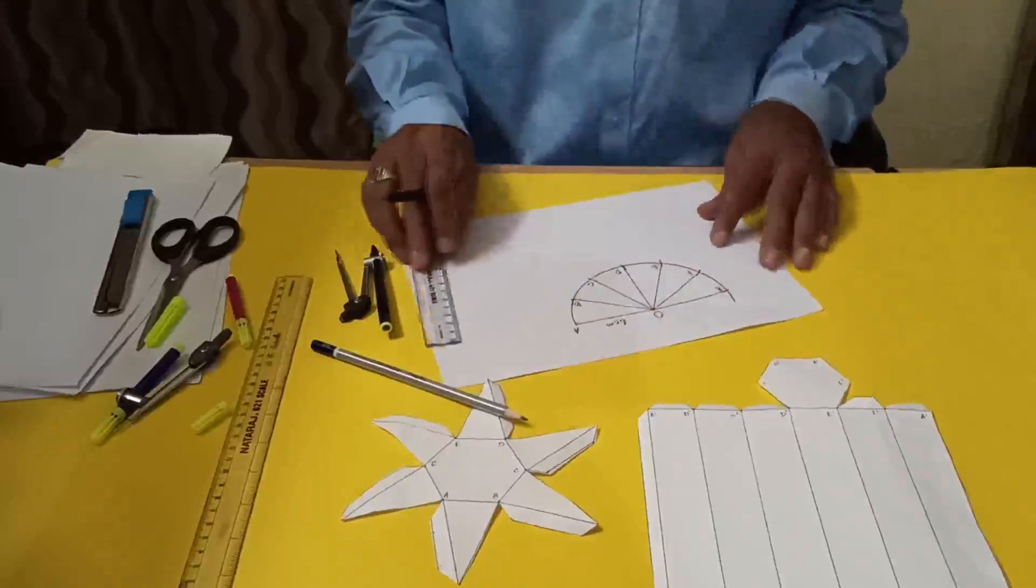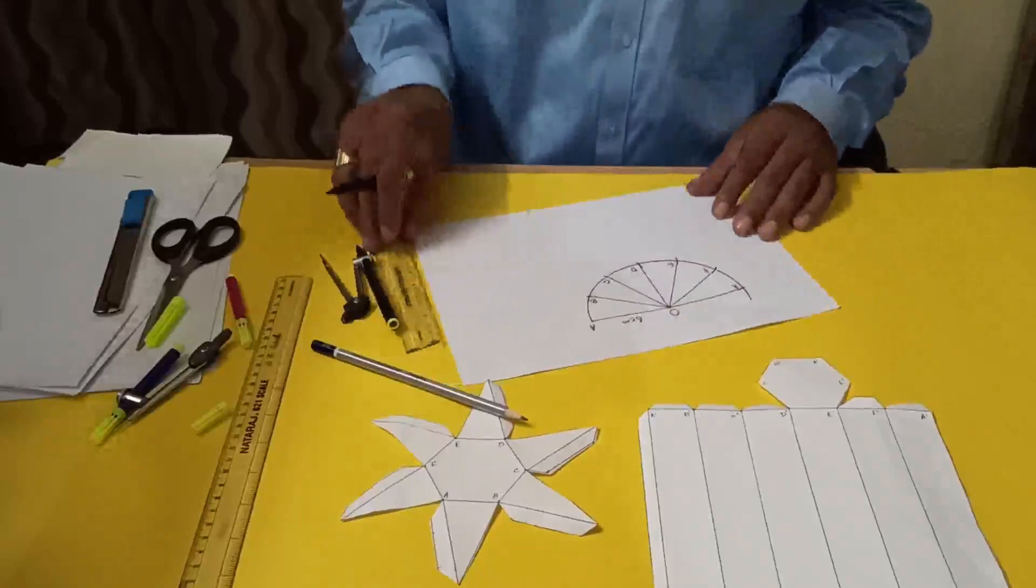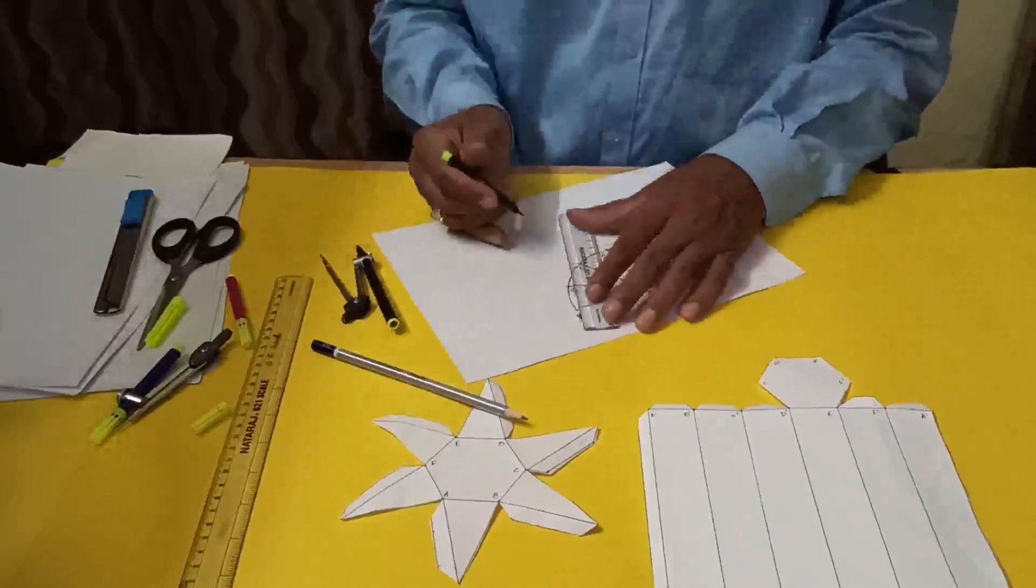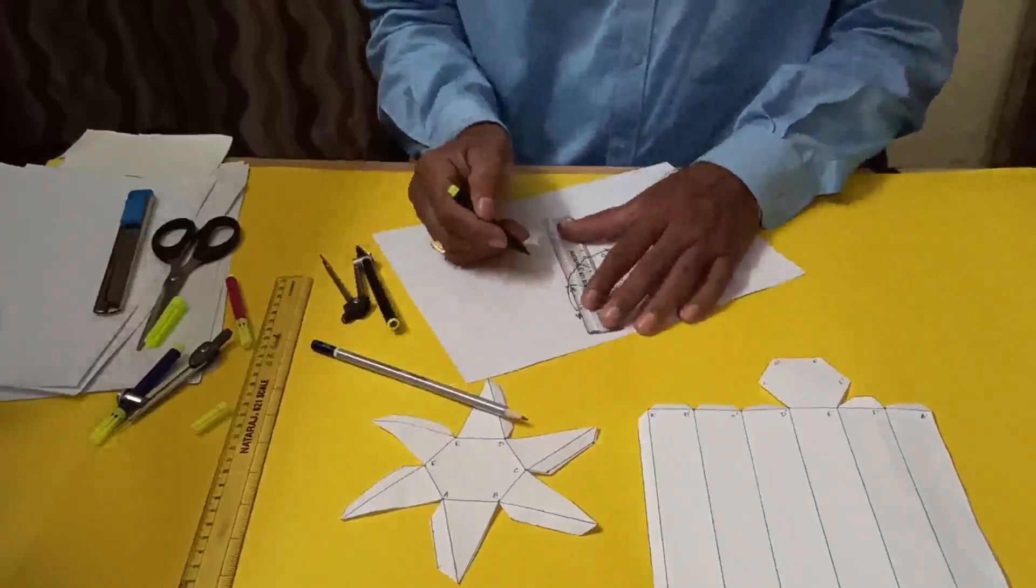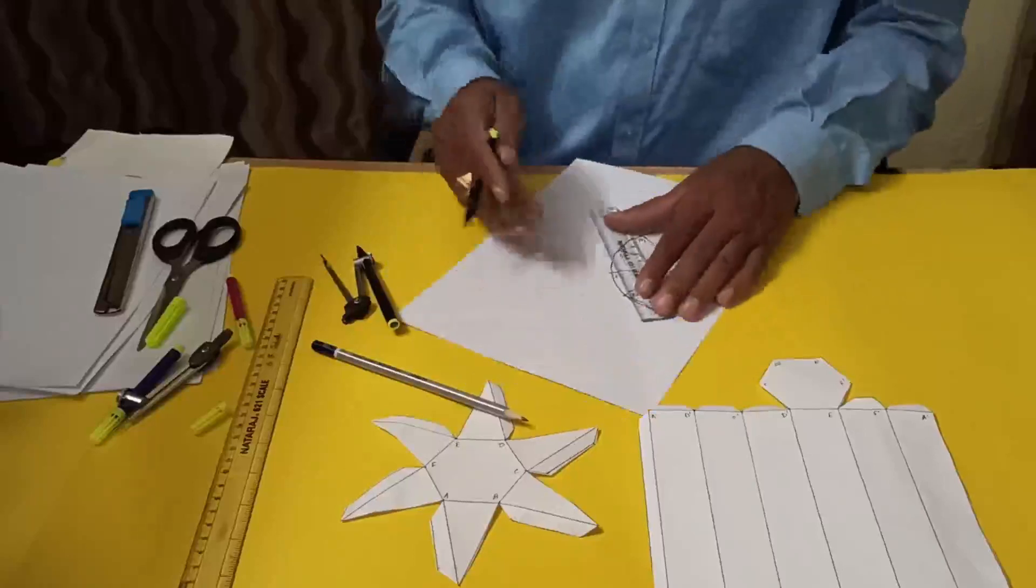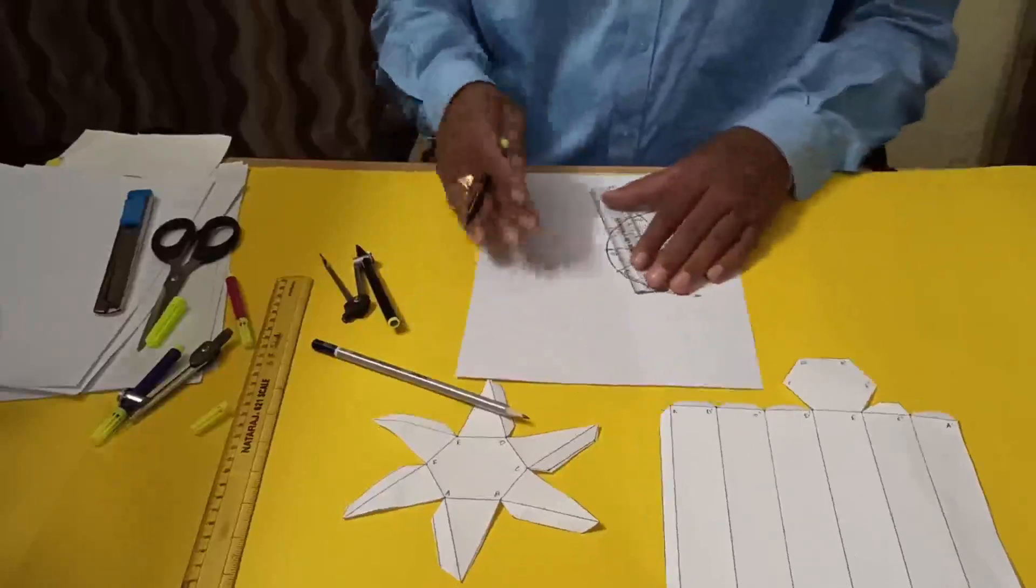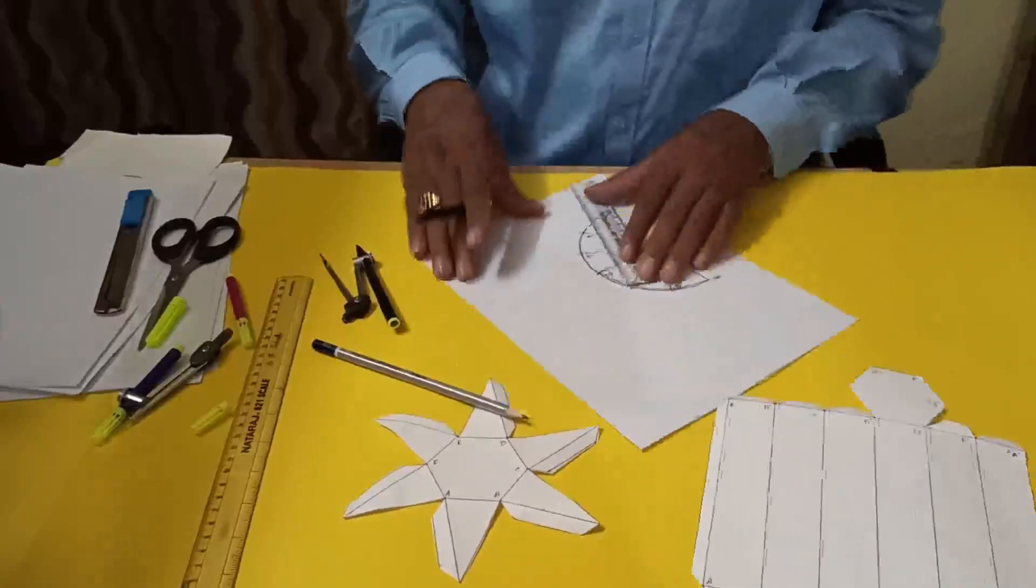Now for the border, before drawing the border we have to do another thing. We have to join A-B, B-C, C-D, D-E, E-F, and F-A.